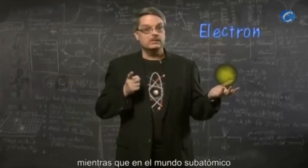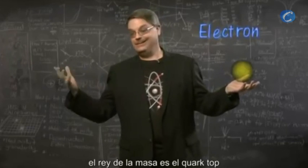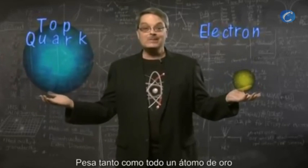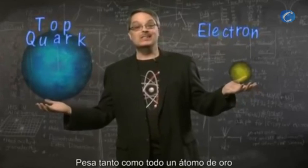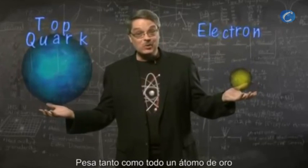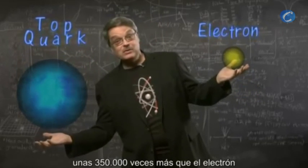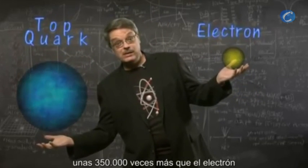The lightest of the familiar subatomic particles is the electron, while in the subatomic world, the king of mass is the top quark. It weighs about as much as an entire atom of gold, about 350,000 times more than the electron.